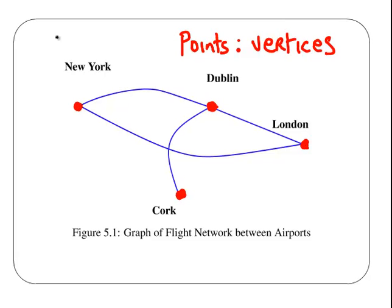And then also, we have the lines that connect these points, and we are going to call these lines edges. We associate the letter V with vertices and the letter E with edges.